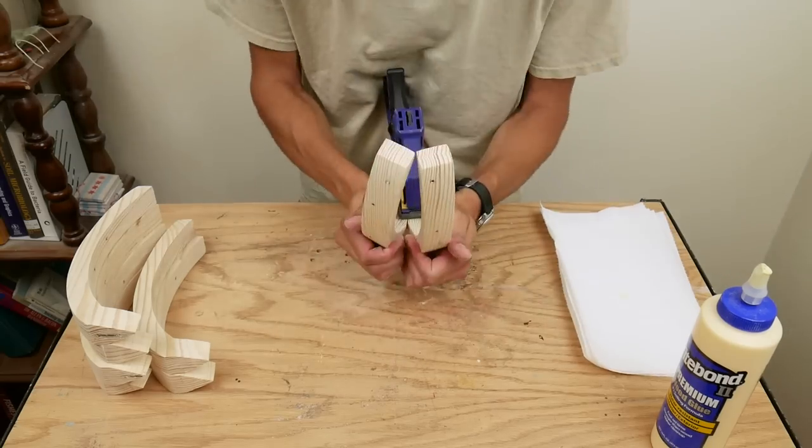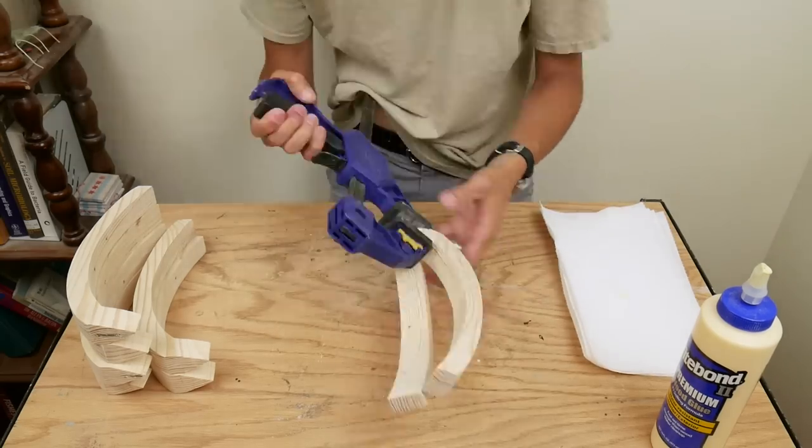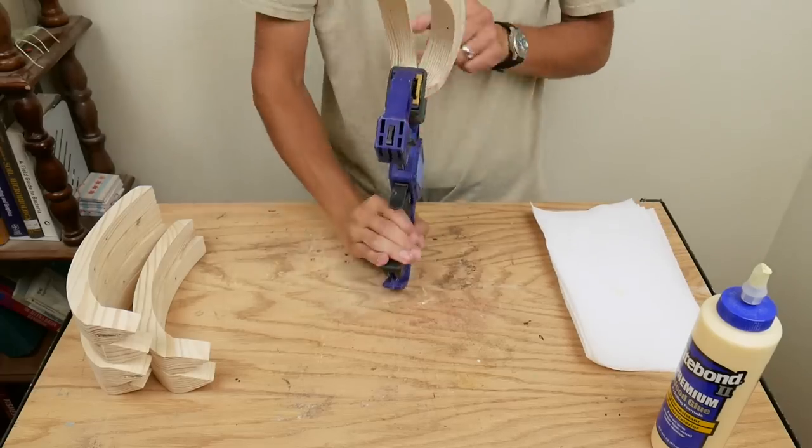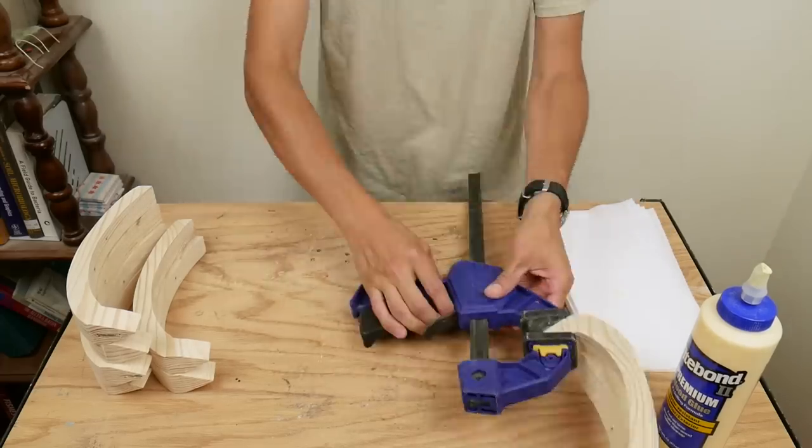Clamping was a bit of an issue with these angles, so I clamped two ribs together from the top and bottom, perpendicular to the glued surfaces, which isn't ideal, but it seemed to work.